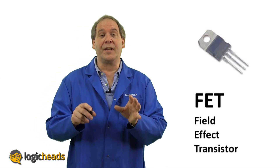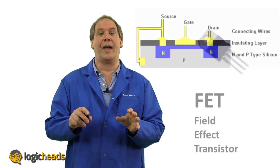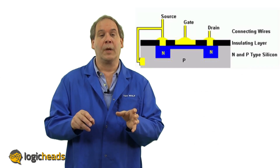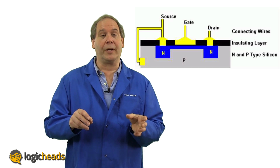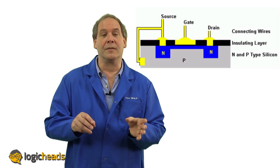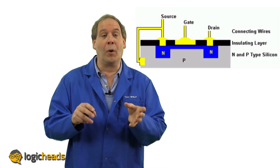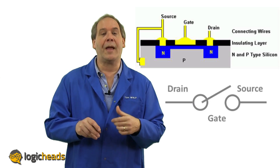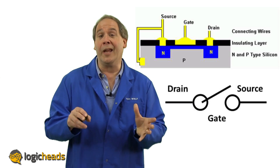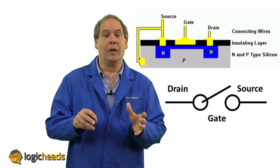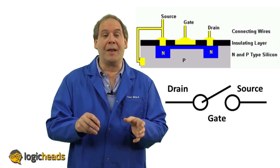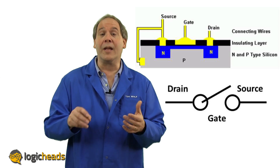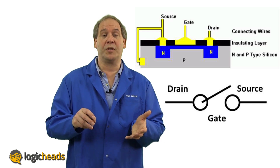A FET is a solid state device. There are no moving metal contacts inside it, like the mechanical switch or the electromagnetic relay. It's built on a silicon substrate, like most semiconductor devices. A series of N or P-doped wells, depending on the type, create the drain and the source, or the input and the output of the FET. The area below the gate metal is a semiconductor. It can be made a conductor or an insulator, depending on the charge applied.